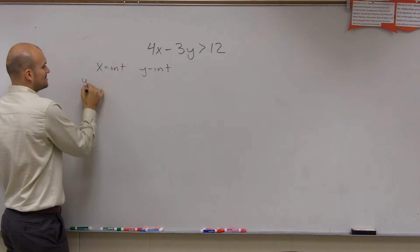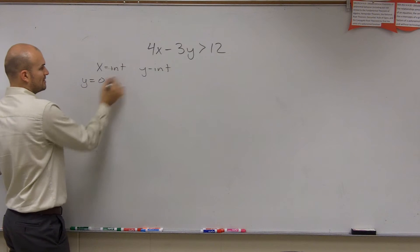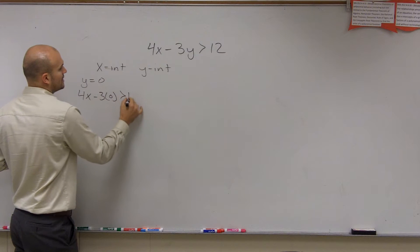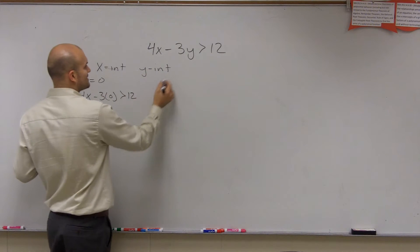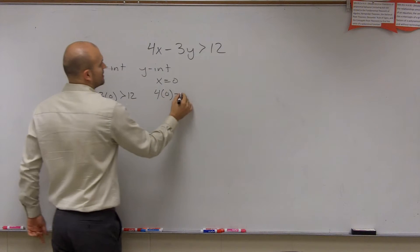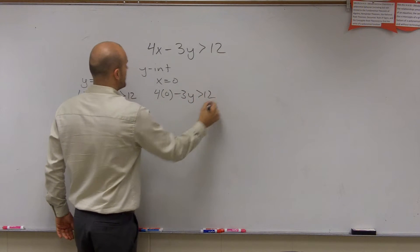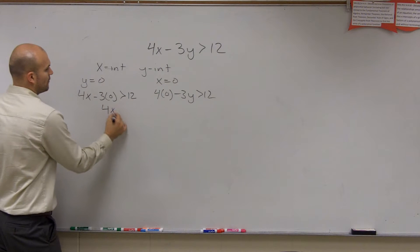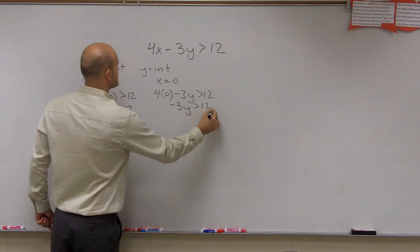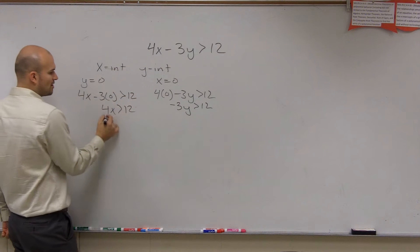What we do, x-intercept, you say y equals 0. So I put a 0 in for y. So I do 4x minus 3 times 0 is greater than 12. Y-intercept, you put an x equal for 0. So you do 4 times 0 minus 3y is greater than 12. Here you get 4x greater than 12. Here I get negative 3y is greater than 12. So for each one, you solve for your variables.